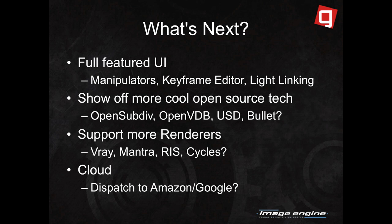So what's next for the open source project? There are still some key UI features missing: manipulators, a keyframe editor, light linking. It'd be good to show off some other open source tech we haven't integrated yet, like OpenSubdiv, OpenVDB, and USD. Supporting more renderers would always be great, and maybe cloud dispatching to Amazon or Google would be pretty cool to have.